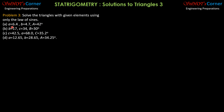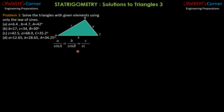So we have part four. Side A and angle A are given, and we have to report our answer to two decimal places. We use the sine law: 6.4 over sine 42 degrees equals B over sine angle B. So first we apply the sine law: 6.4 over sine 42 degrees equals 4.7 over sine angle B.